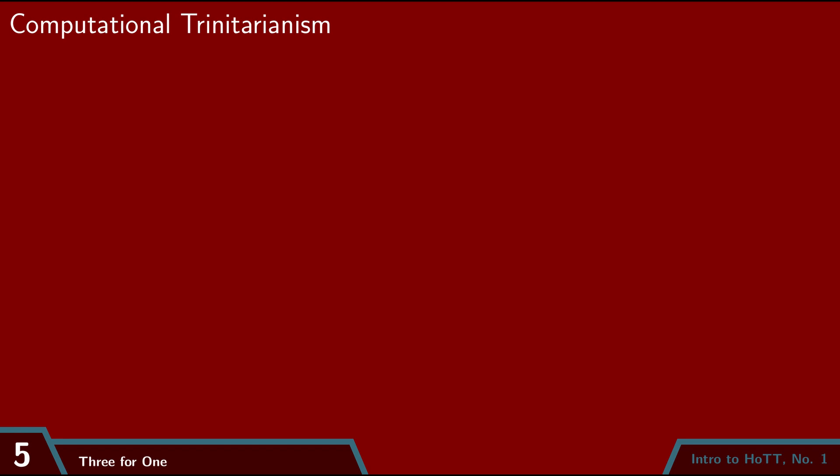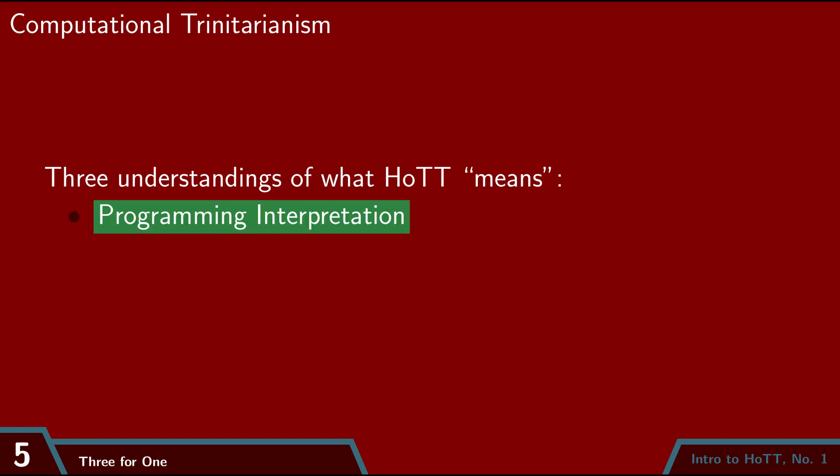As we build the language of homotopy type theory, which we'll start to do in this video, we'll constantly be interpreting what it means. But we won't give it just one meaning, we'll give it three. First, we can give homotopy type theory a computational interpretation, understanding it as being a kind of programming language which can be computed with. Second, we can give it a homotopical interpretation, understanding HoTT to be a language describing spaces and shapes and structures.